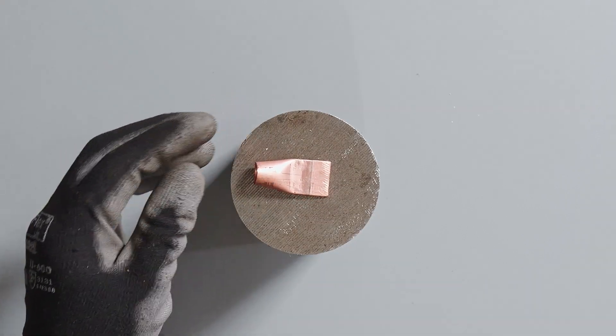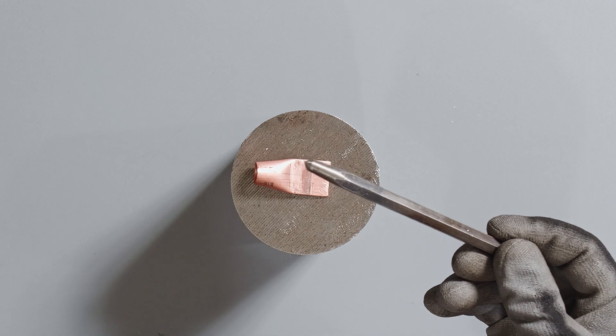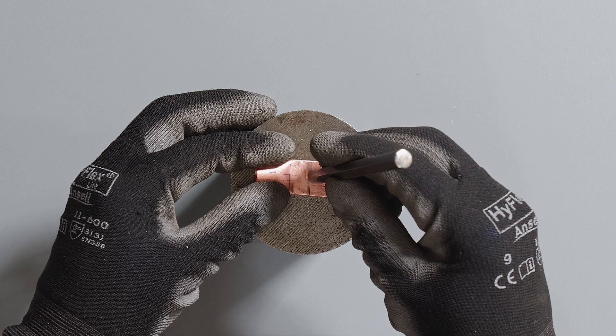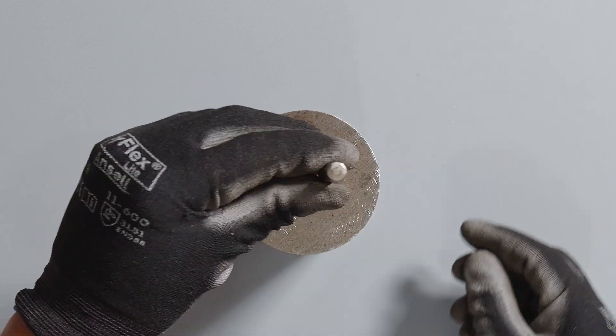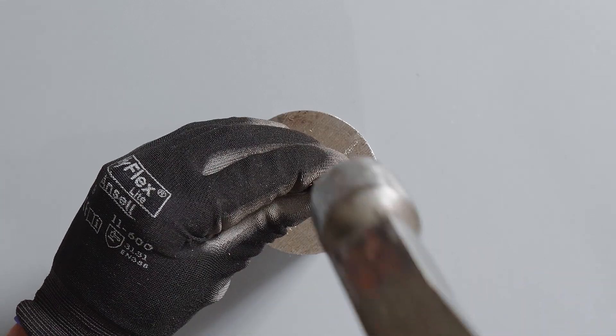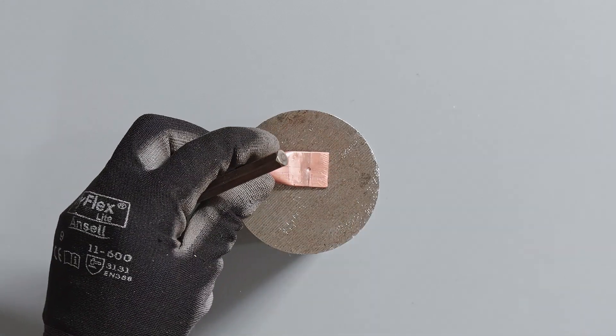Next what we're going to do is use a punch and put a little dimple right there in the middle. What this dimple is going to do for us is help keep our drill bit in place when we drill out our hole.